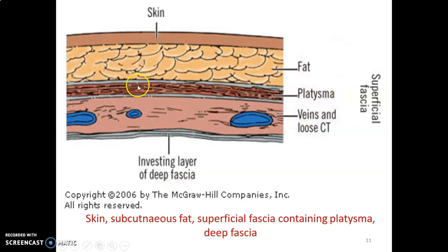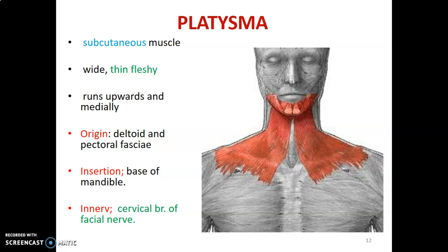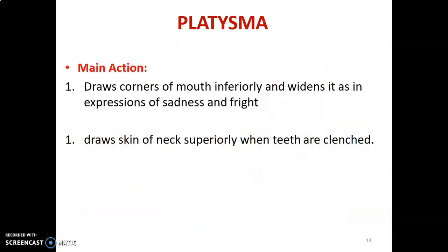The layers from the skin are: superficial fascia with some fat, then platysma muscle, plus neurovascular structures, before you reach the deep fascia. Platysma is a subcutaneous, wide, thin muscle that runs upwards and medially. It originates from deltoid and pectoral fascia, inserts onto the base of the mandible, and is innervated by the cervical branch of the facial nerve. Its action is to draw the corners of the mouth inferiorly — expressing sadness and fright — and to draw the skin of the neck superiorly.